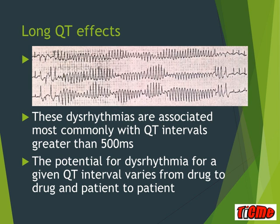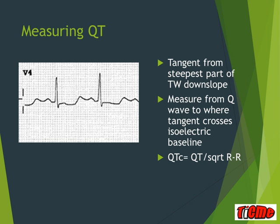Some drugs hardly ever cause arrhythmias; others are much more prone. To measure the QT, find the lead where the QT is longest, then take a tangent from the steep part of the T-wave downslope. Measure from where this tangent crosses the isoelectric line back to the start of the Q wave. You can measure in little squares and multiply to get seconds, then correct for rate: QT corrected equals QT divided by the square root of the preceding R-R interval.